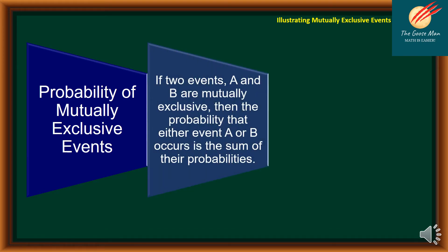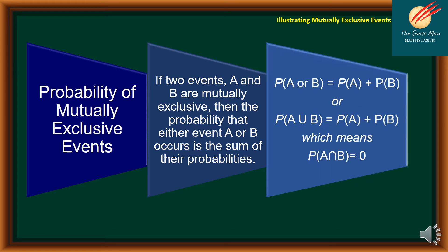To summarize: if two events A and B are mutually exclusive, then the probability that either event A or B occurs is the sum of their probabilities. In symbol: P(A or B) = P(A) + P(B), which means their intersection — the probability of A and B — is equal to zero.